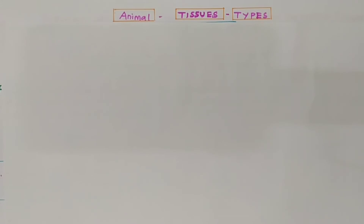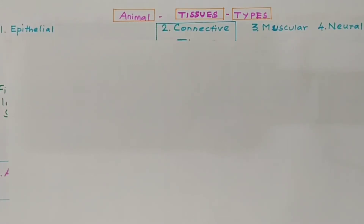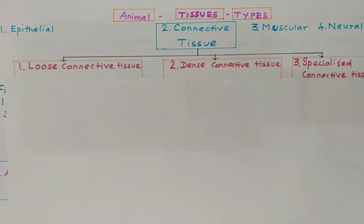As we have already discussed, animal tissues are four types: epithelial tissues, connective tissues, muscular tissues, and neural tissues. The connective tissue are three types: number one, loose connective tissue; number two, dense connective tissue; and number three, specialized connective tissues.